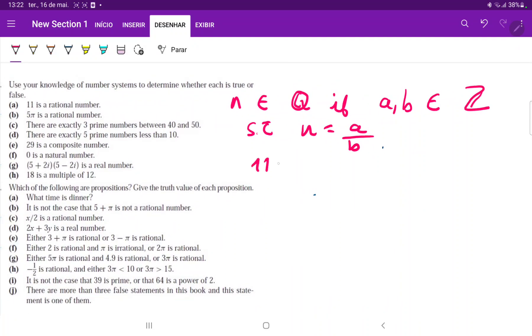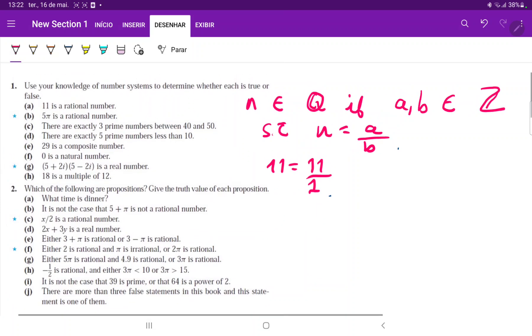So 11 is clearly equal to 11 divided by 1. 11 and 1 are both integers, so this does fit our definition, so true.